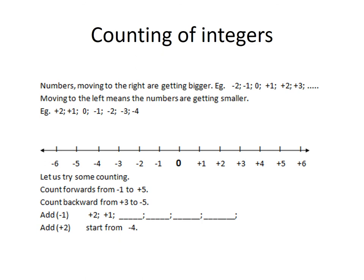Now we are going on to counting of integers. Numbers moving to the right are getting bigger. For example, if I started at negative 2 and I want the numbers to get bigger, then I will go from negative 2, negative 1, 0, positive 1, positive 2, positive 3, positive 4, and so on.